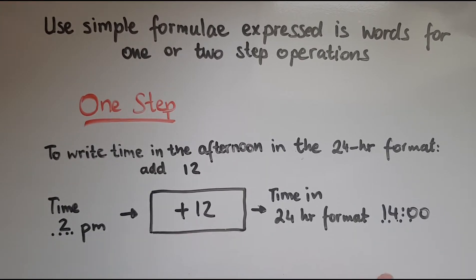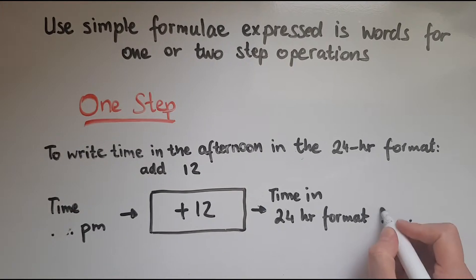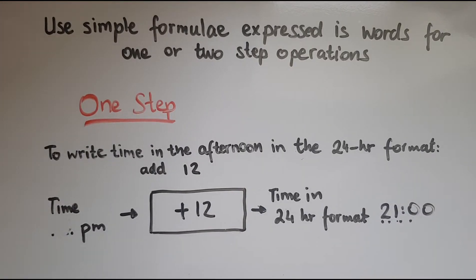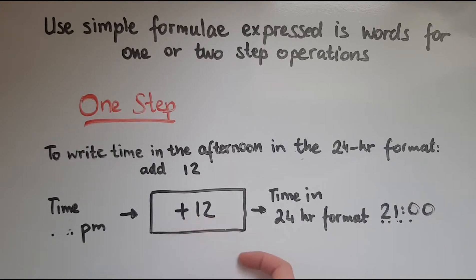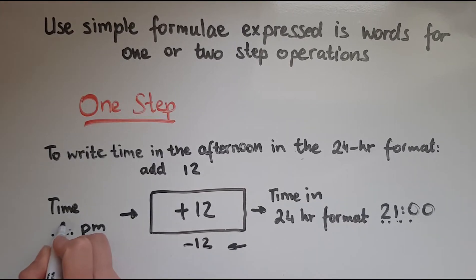As well as going this way, you should be able to reverse the process. Let's say you're given the time in 24-hour format — say it is 21:00. We need to find what the time was in the 12-hour format in the afternoon. We've got 21. Initially we added 12, so now we're going to take away 12, because addition and subtraction are opposites of each other. So 21 minus 12 gives me 9 — it's 9 o'clock. It works both ways.